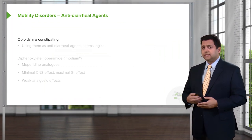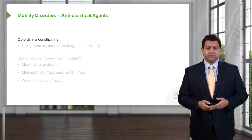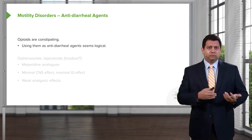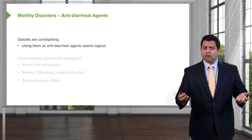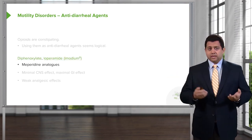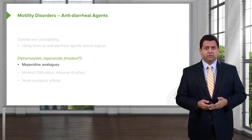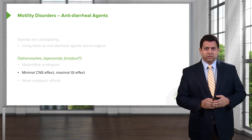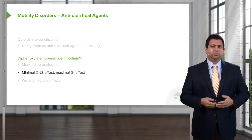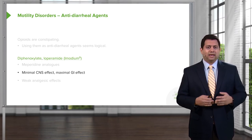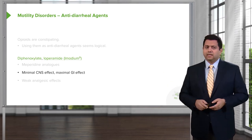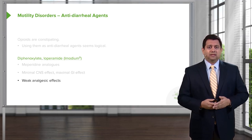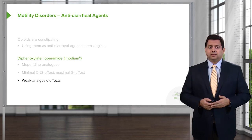Opioids are constipating, and we can actually use opioids as anti-diarrheal agents. However, we don't want to use strong opioids — we have a weak opioid agent commonly sold as Imodium, which is an analog of meperidine. It has minimal central nervous system effects and maximum GI effects. Originally released for pain control, the GI side effects led to it being repurposed for diarrhea, and it works really well. Imodium is probably the number one selling over-the-counter anti-diarrheal agent.